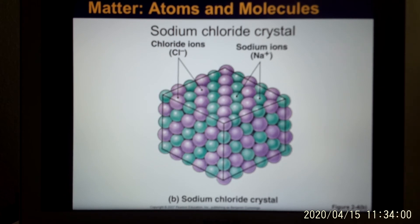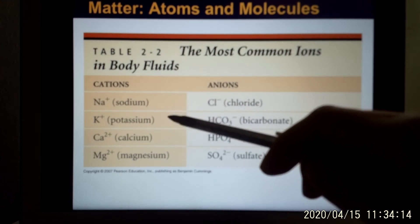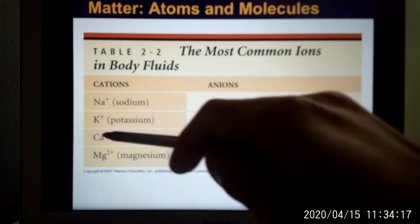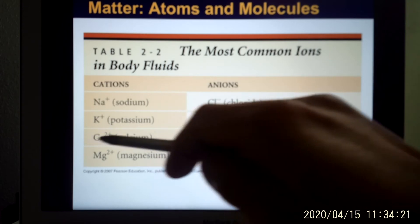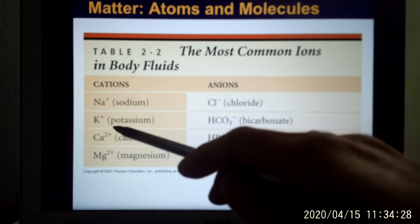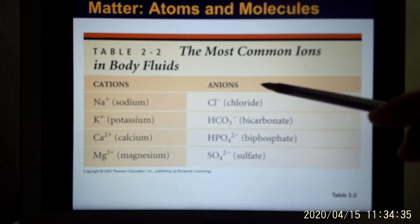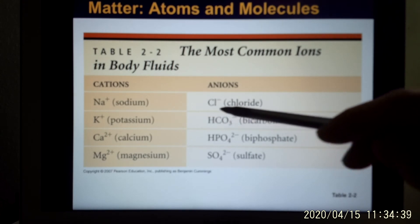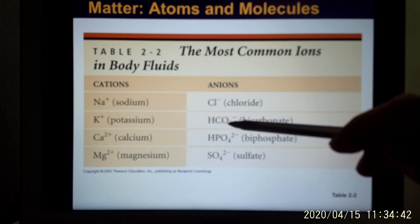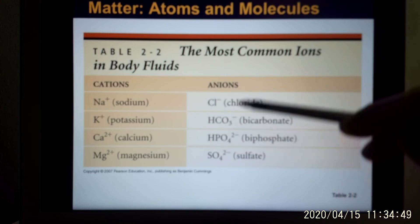This is sodium chloride, and the bond combining them together is the ionic bond. Those ions with positive charge we call cations — like sodium, potassium, calcium (positive 2, meaning it gives 2 electrons away), and magnesium (also giving 2 electrons away). The group with negative charge we call anions — like chloride, bicarbonate (HCO3 as a whole, negative 1), biphosphate (negative 2), and sulfate (negative 2). So these are anions, and those are cations.